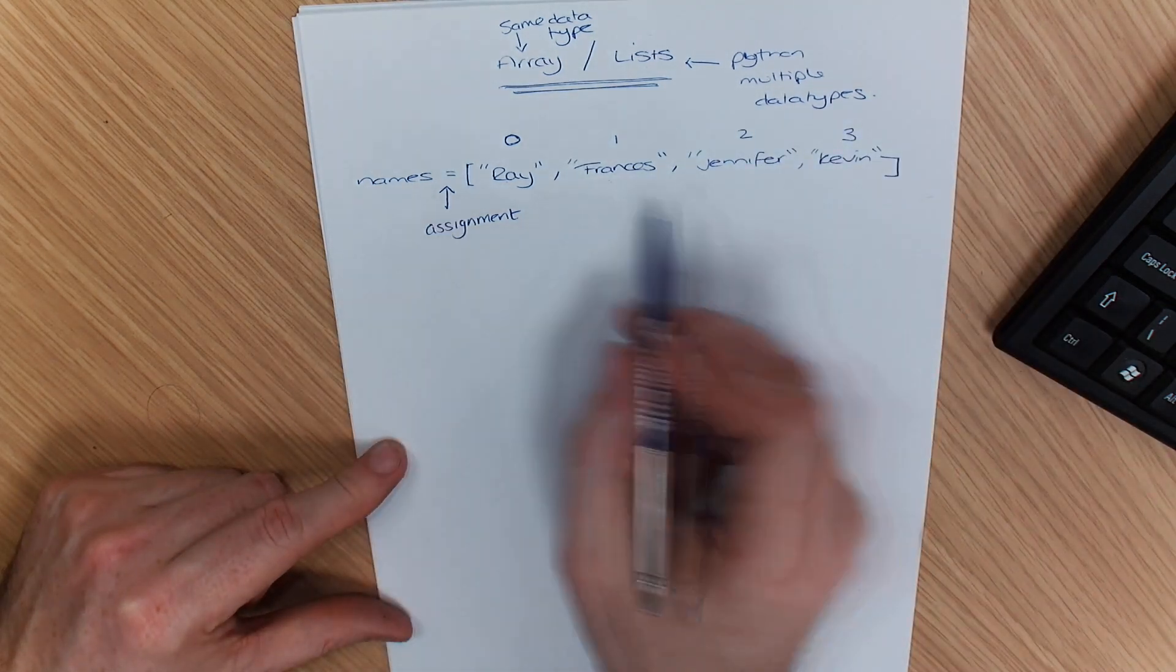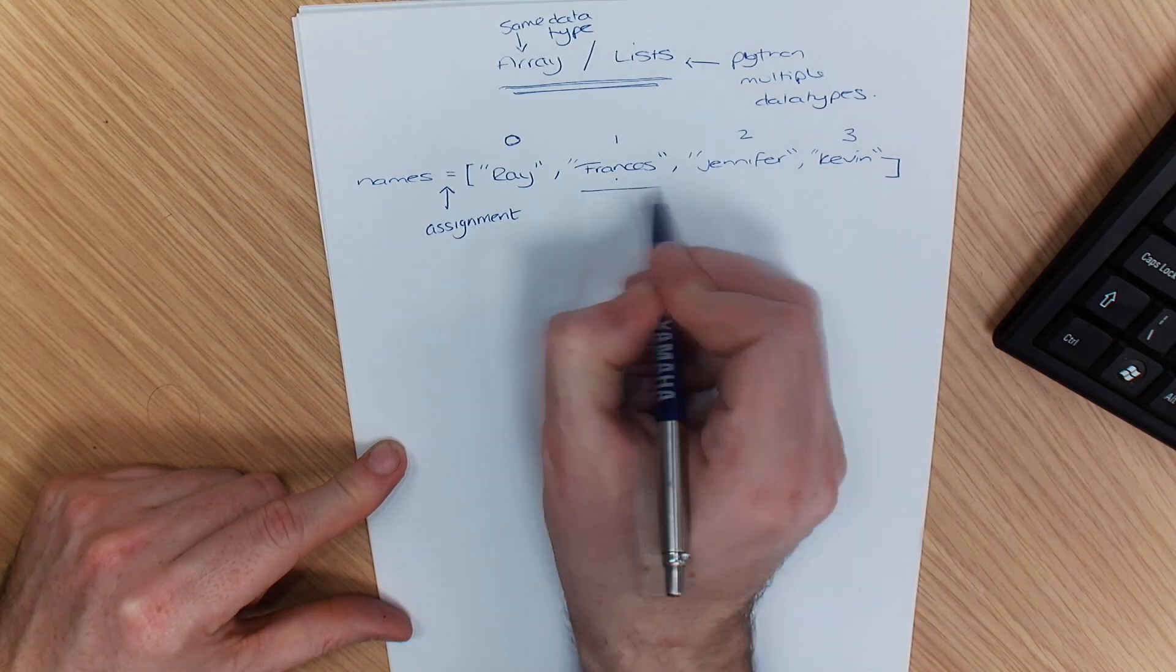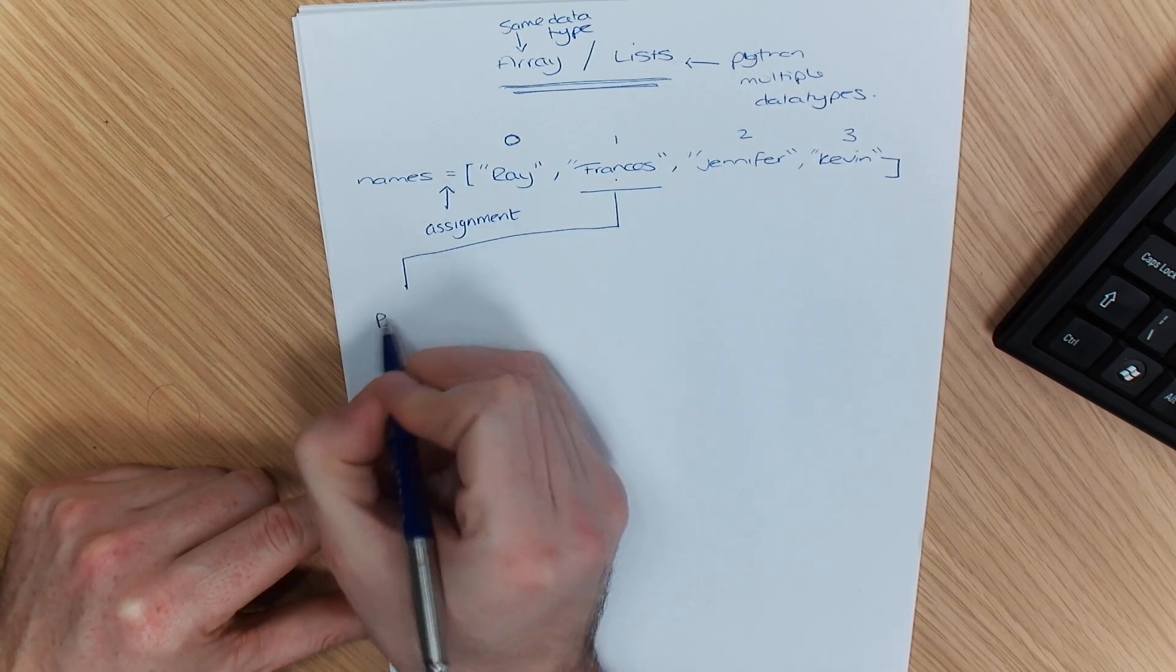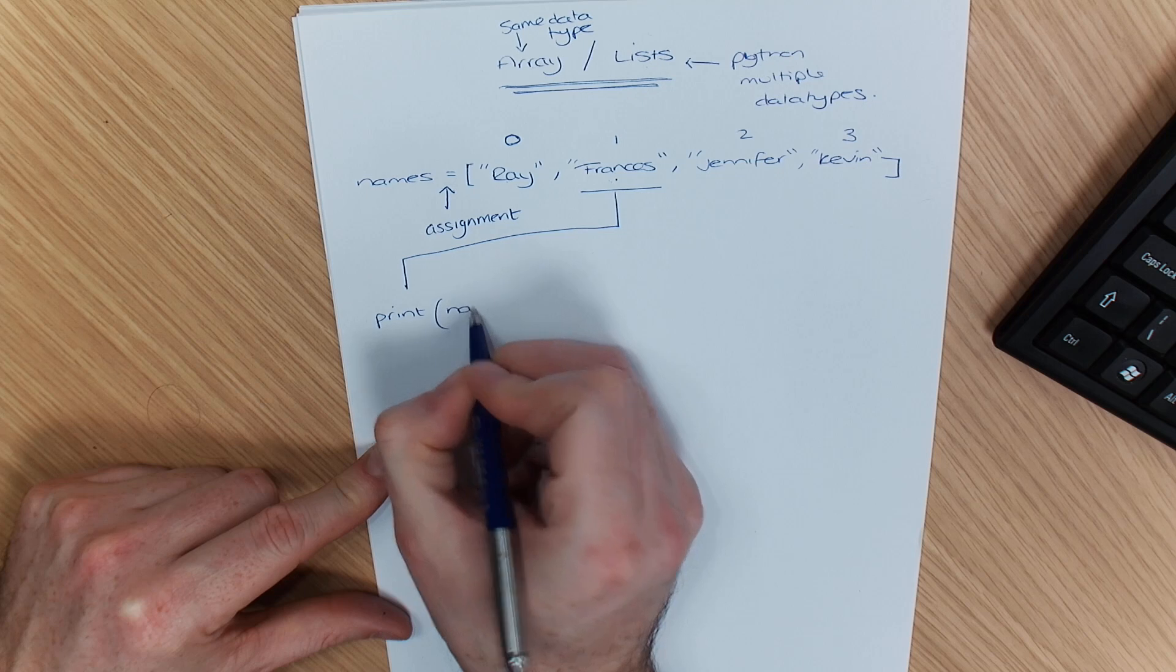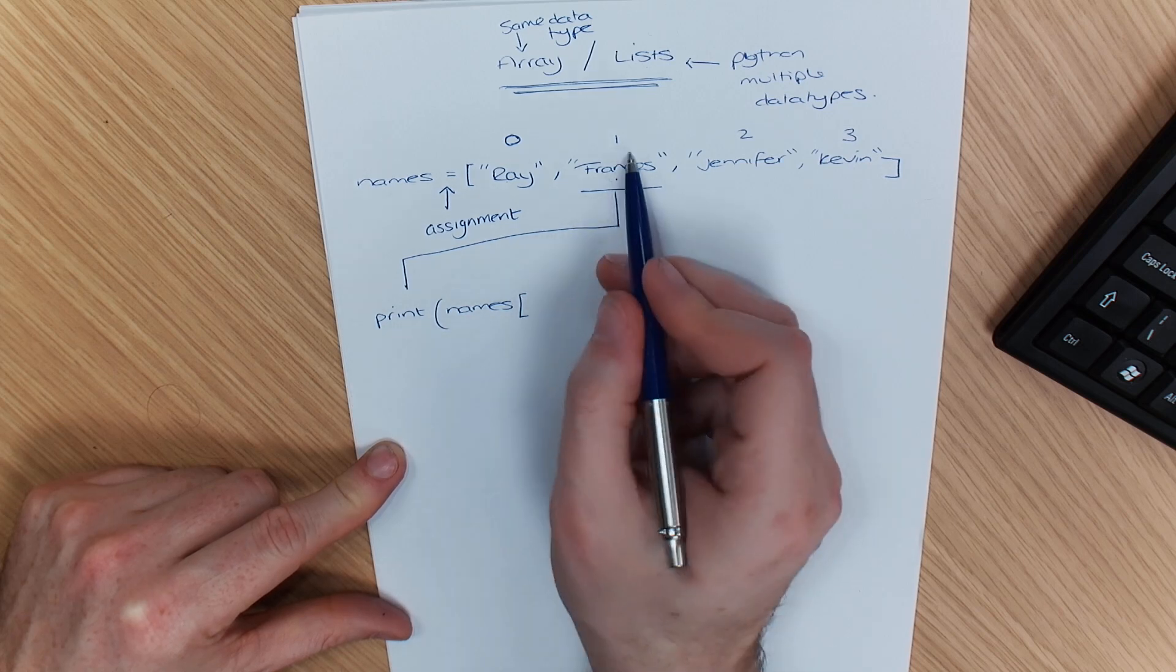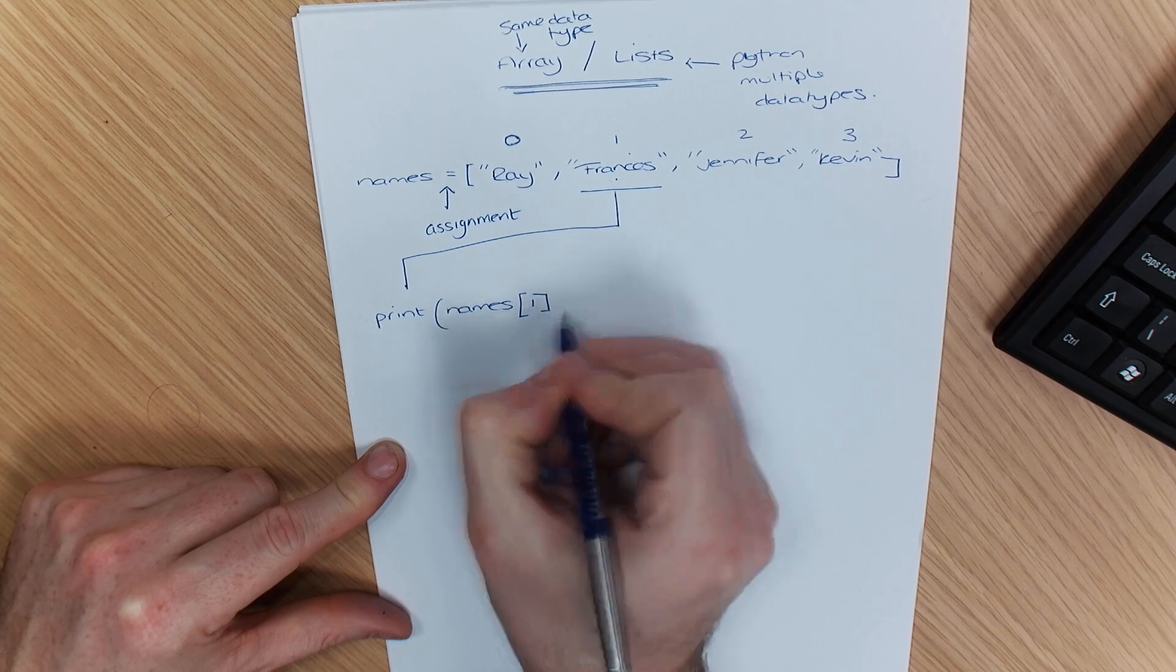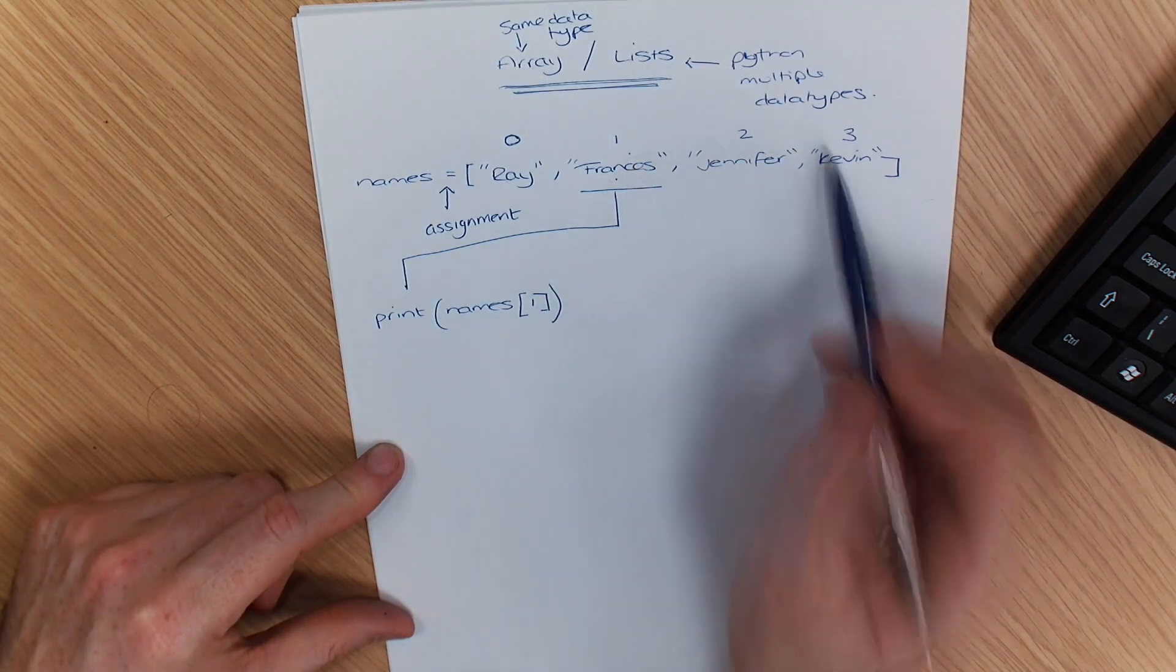Now if I wanted to print out item, I wanted to print out, say, Francis, what I would need to do in Python is say print, in brackets, names, and what I can do is use the square brackets to say the position. Francis is in position one. So I close that, and that is how I pick individual items.